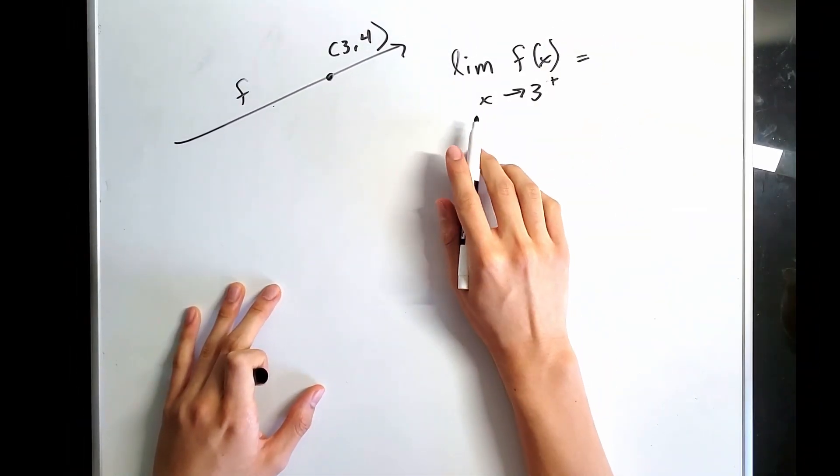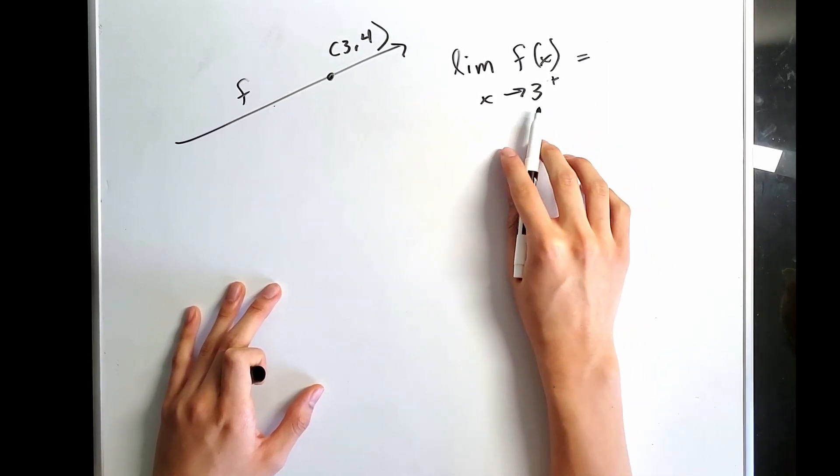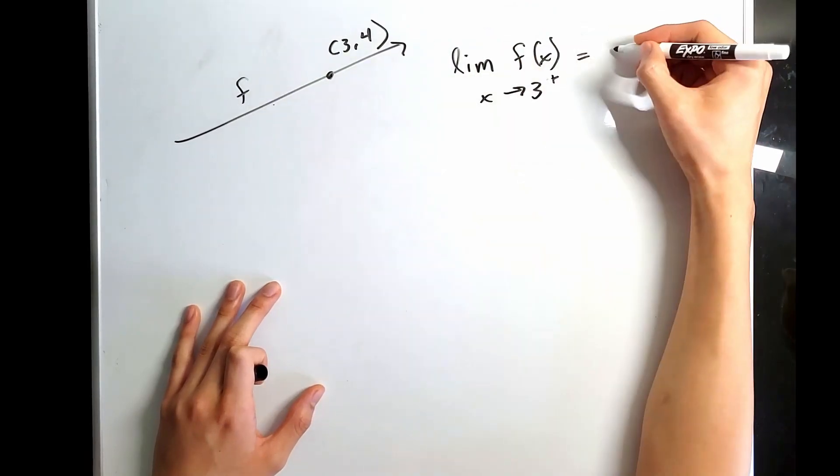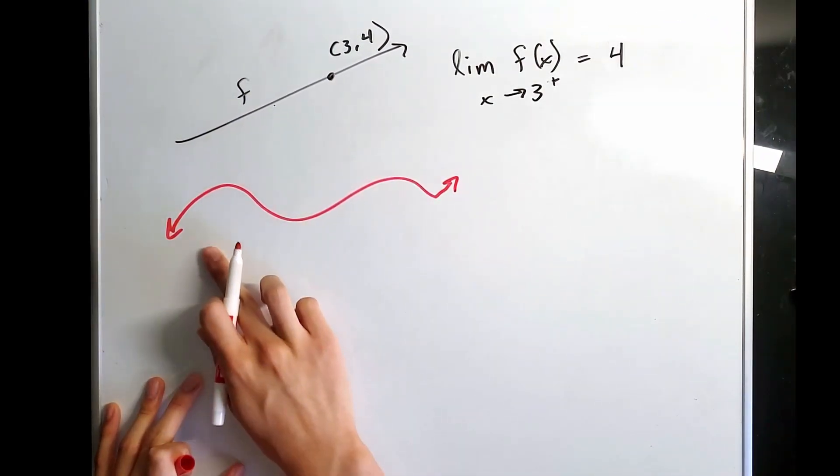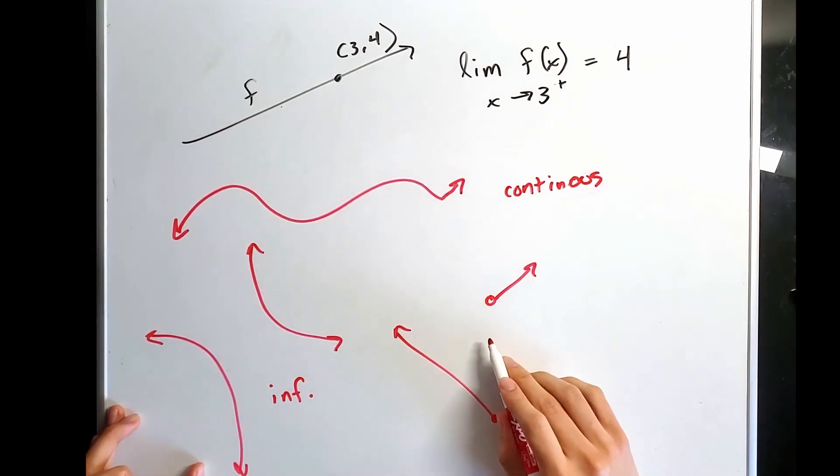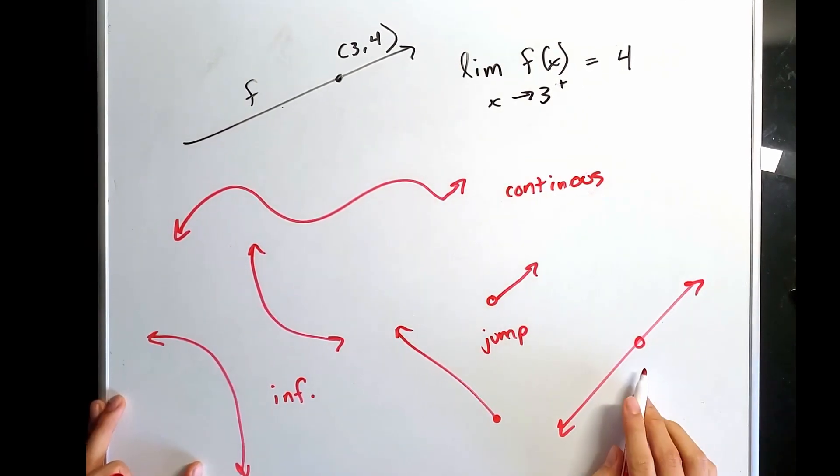Limits are simply to find the value that a function approaches as you get closer to the value. In this example, as x approaches 3 is equal to 4. Continuous functions have no breaks, gaps, or holes. This is an example of infinite discontinuity. This is an example of jump discontinuity. And this is an example of removable.